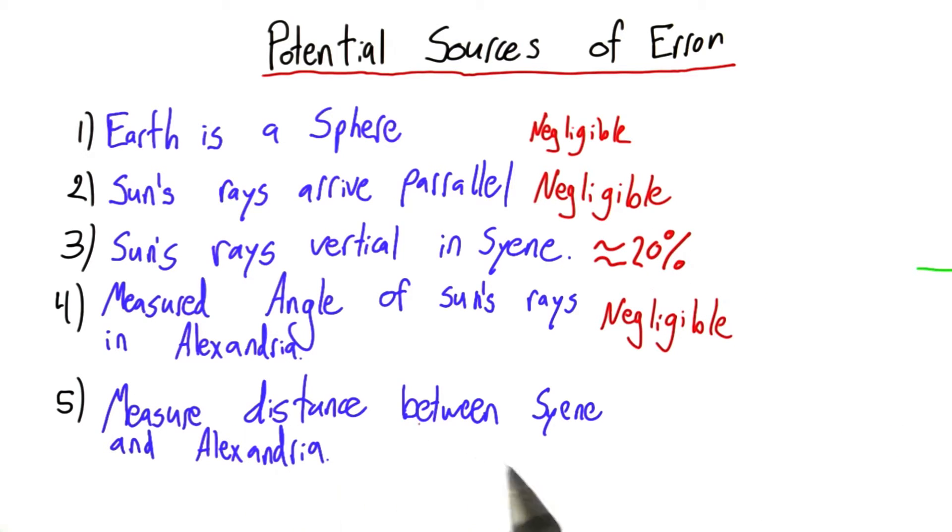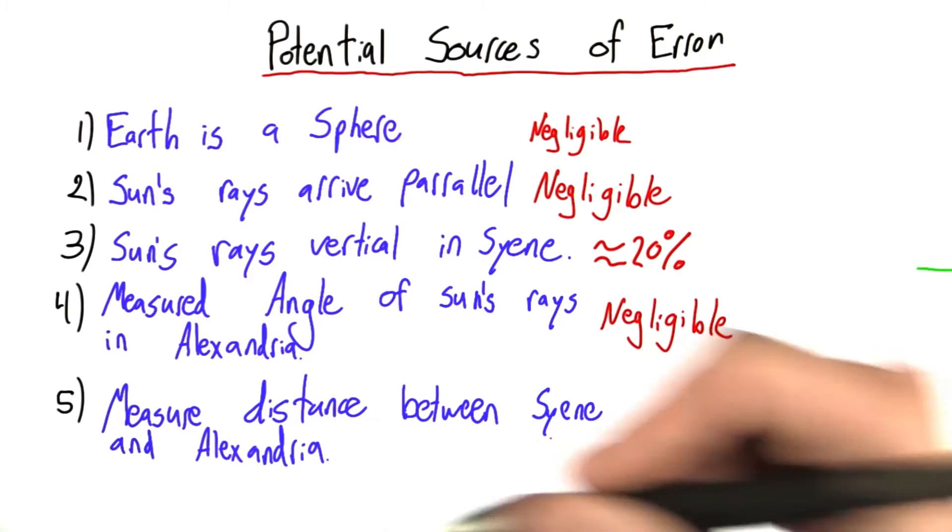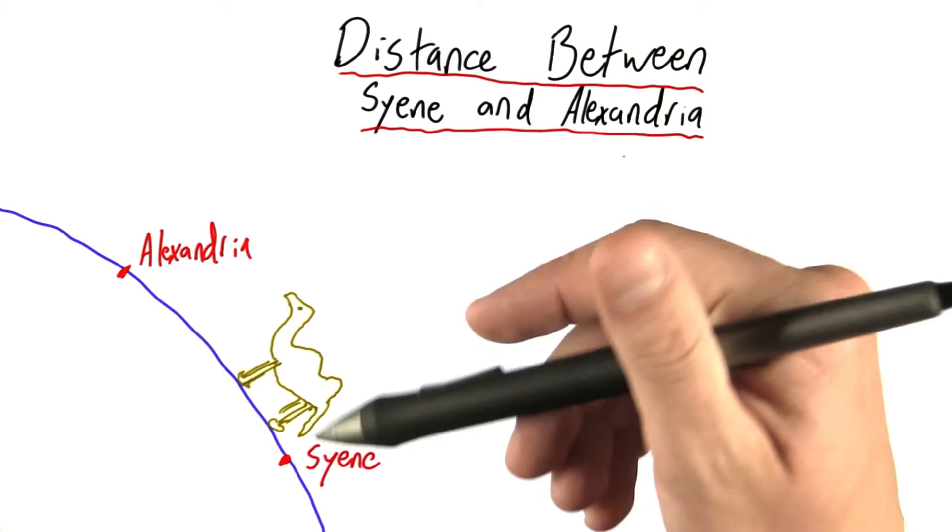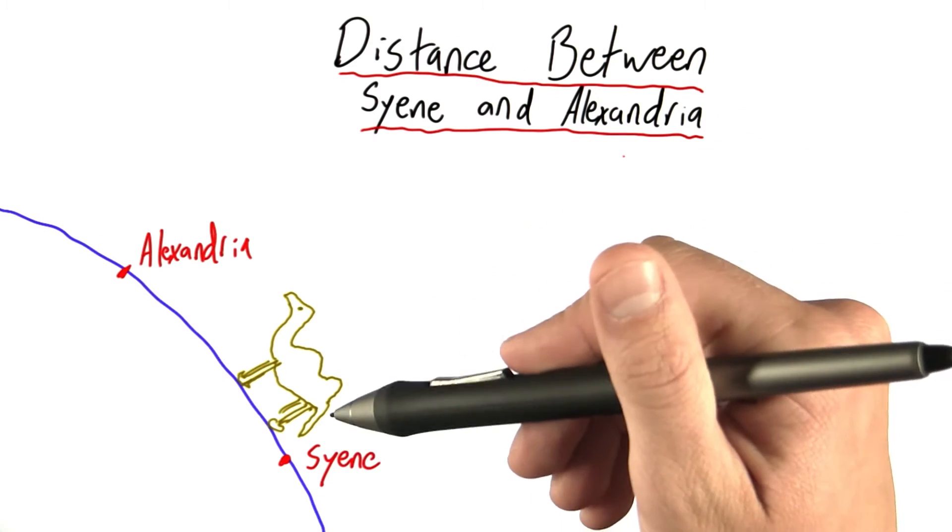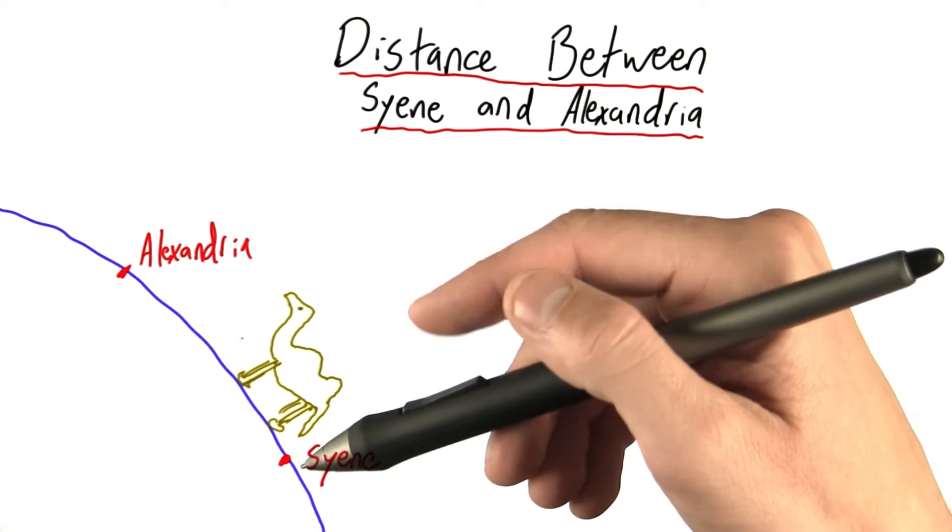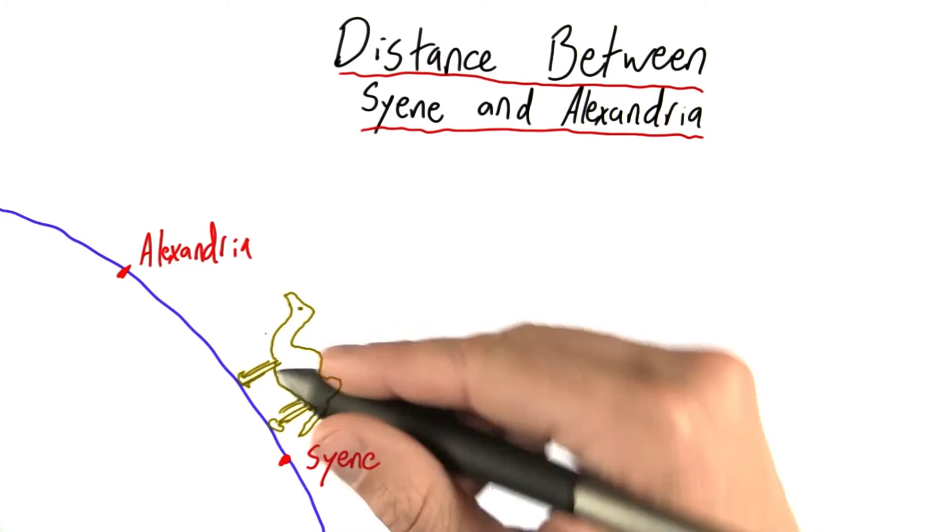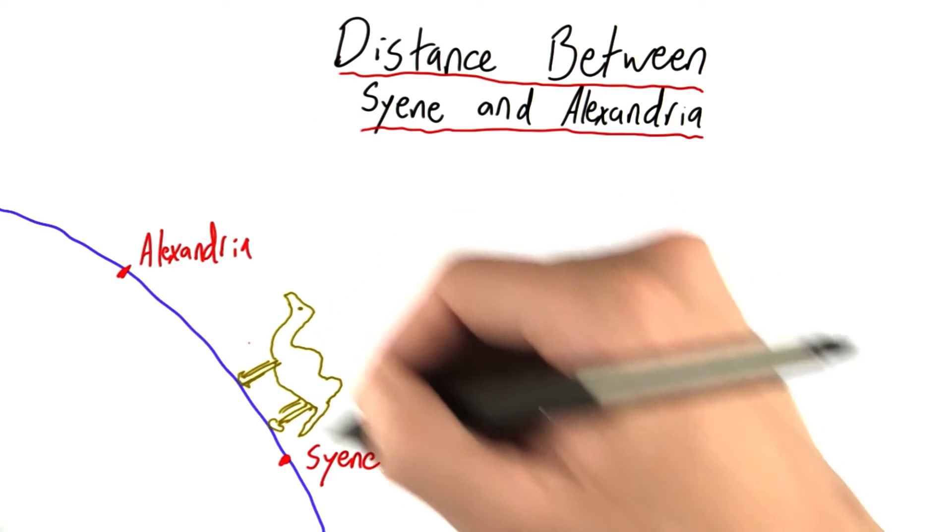Next, we have measuring the distance between Syene and Alexandria. To estimate this distance, surveyors at the time would time camels, and using some assumptions based on how quickly a camel would walk, they would infer a distance between these two cities.